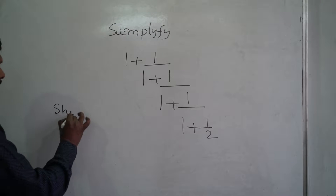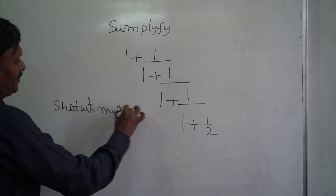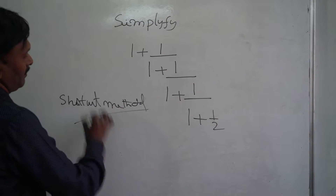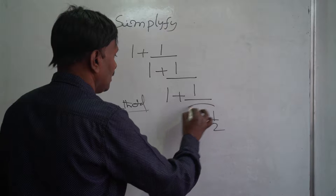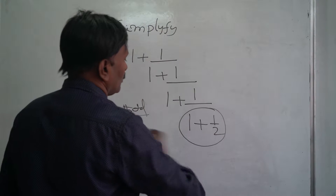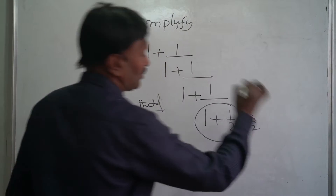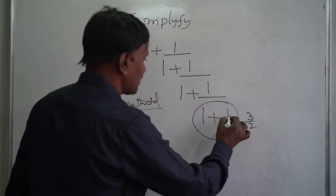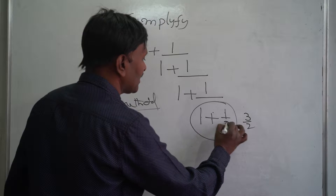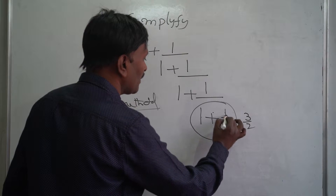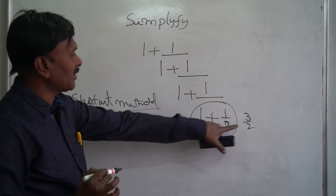Shortcut method. We start from the innermost: 1 plus 1 by 2. Using the shortcut, 1 plus 1 by 2 — here 2 plus 1 is 3, so the result is 3 by 2. So 1 plus 1 by 2 is 3 by 2.